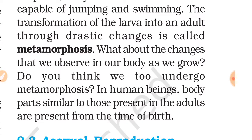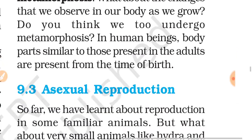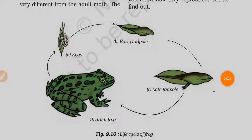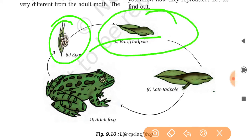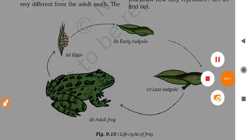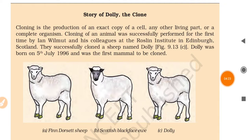What about the changes we observe in our own bodies as we grow? Do you think we undergo metamorphosis? In human beings, body parts similar to those present in adults are present from the time of birth. These are the stages of the life cycle of the frog: first it lays eggs, then there is the early tadpole structure, then the late tadpole, and finally it converts into an adult frog.